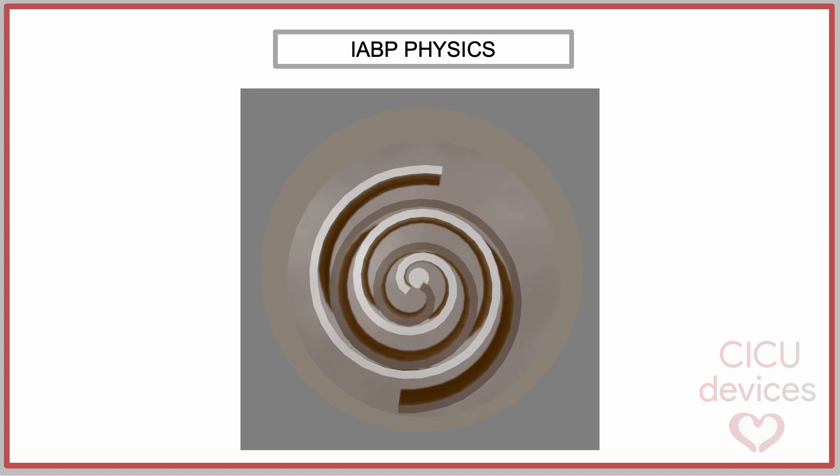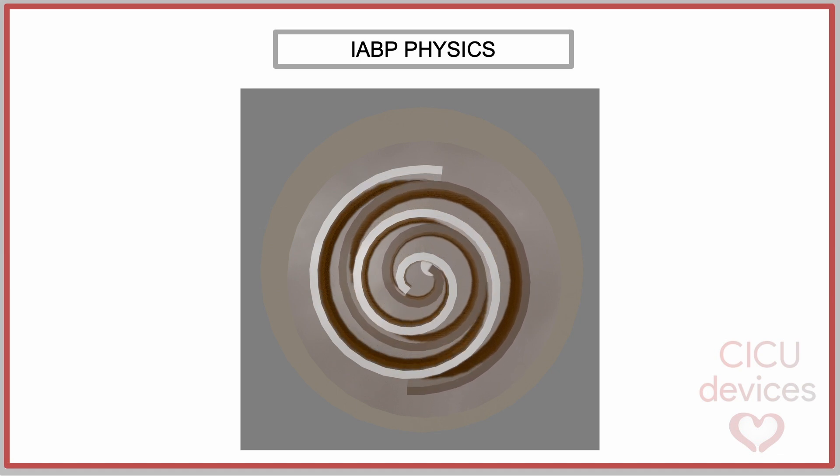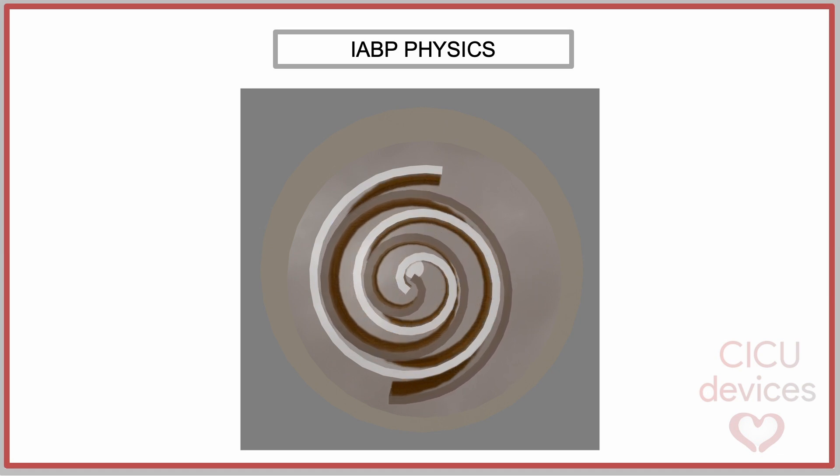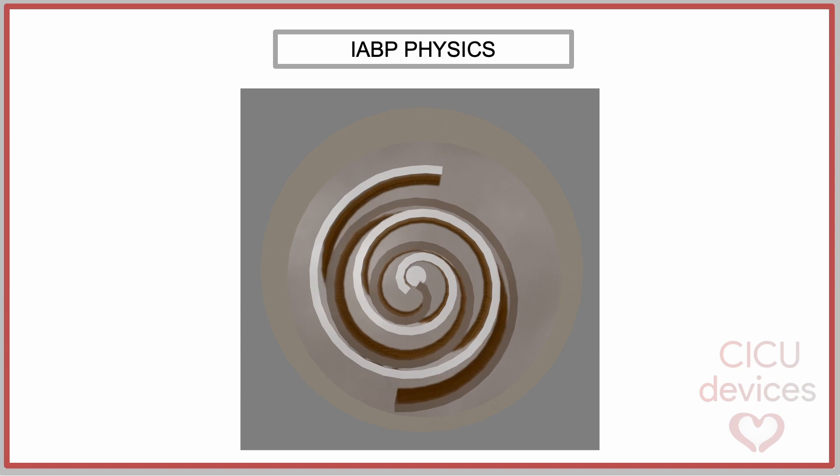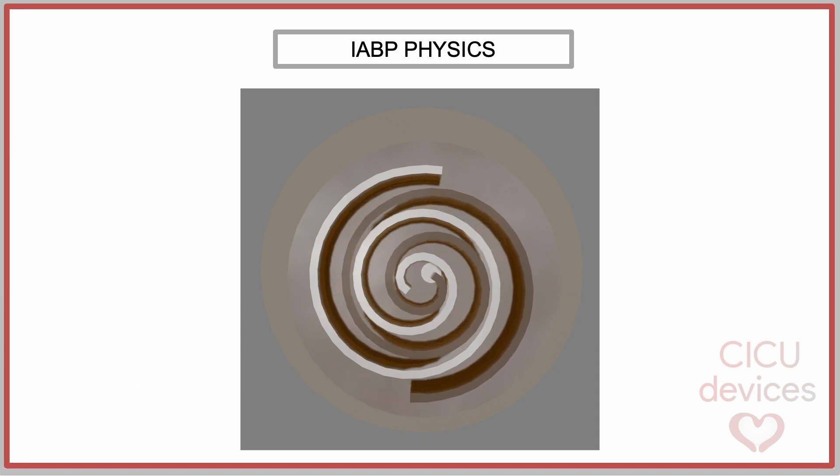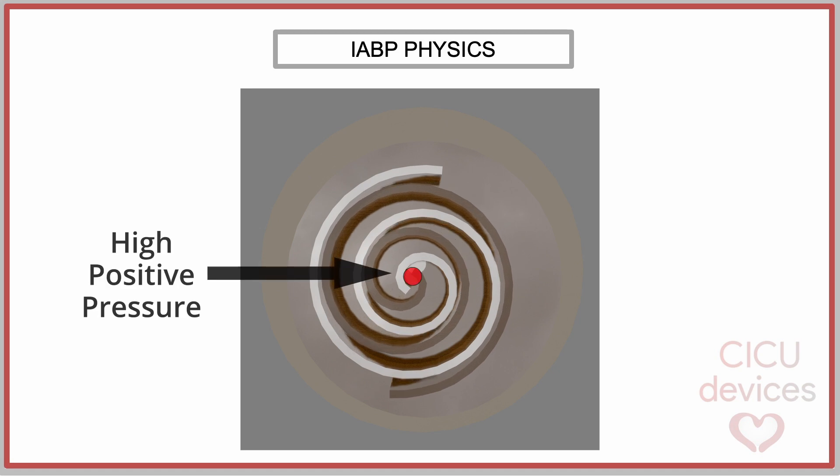This system generates two pressure zones, an inlet zone with negative pressure and an outlet zone with positive pressure. The negative pressure in the inlet zone causes the gas to enter the system through the inlet port. The orbiting scroll rotates, trapping the gas in increasingly smaller volumes. As the scrolls rotate, the air is compressed and pushed towards the center. The compressed air is discharged through the outlet at the center with high positive pressure.